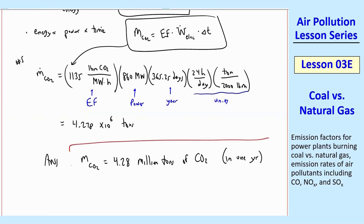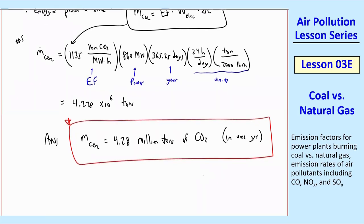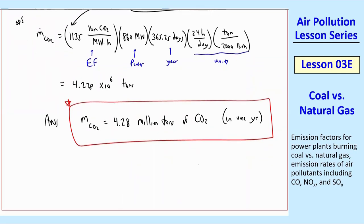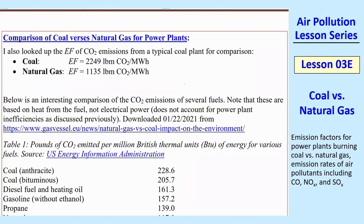That is a huge amount of CO2. It's just a gas, but we're talking about a gas that now weighs 4.3 million tons — and a ton is 2,000 pounds. That's an awful lot of CO2, and this is just from one power plant. So you can see that reducing CO2 emissions is a daunting task with all the power plants we have, and a lot of them are still burning coal.